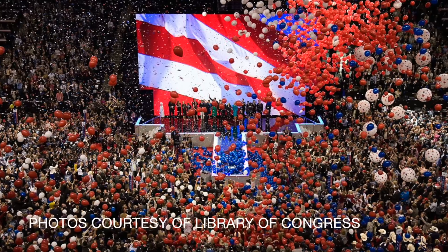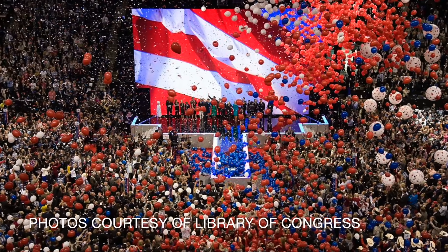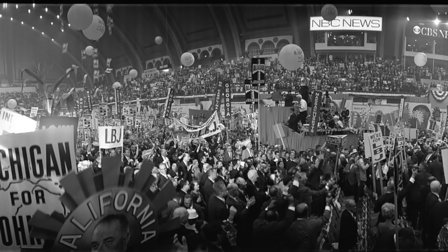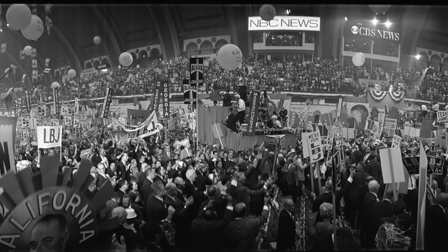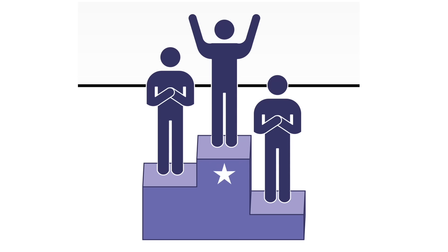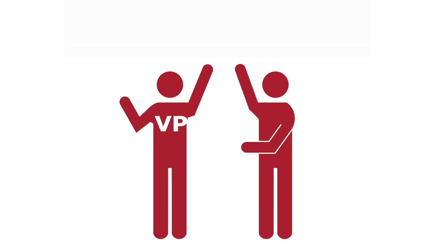After the primaries and caucuses, each major party, Democrat and Republican, holds a national convention to select a presidential nominee. The party's presidential nominee then announces his or her choice for vice president.